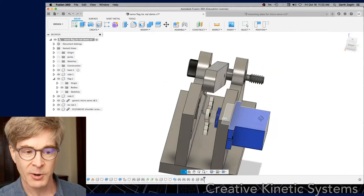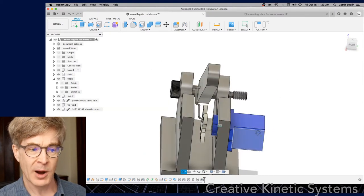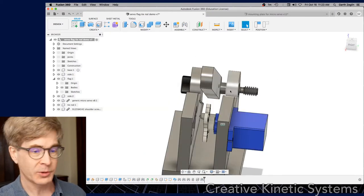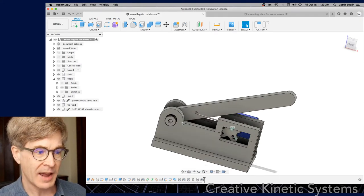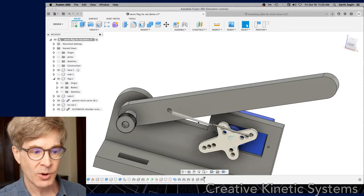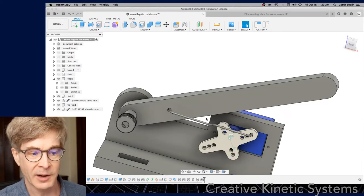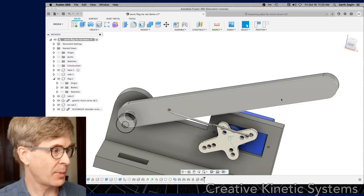So here I have the servo kind of panel mounted into a side panel. And then there's a moving part on a shoulder screw that is supported by a clevis supported by these two side plates. I'm going to hide one of the side plates so we can see better what's going on.